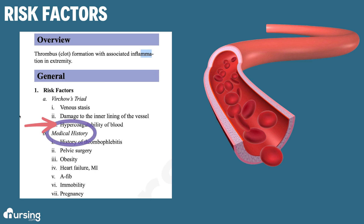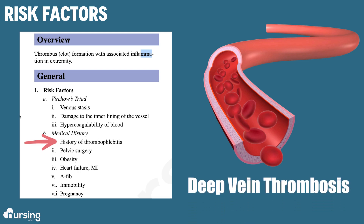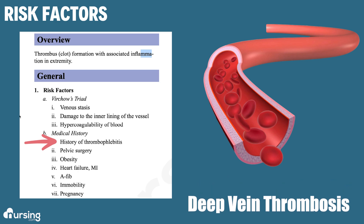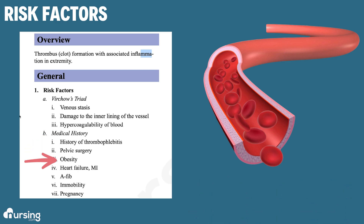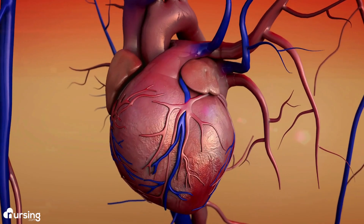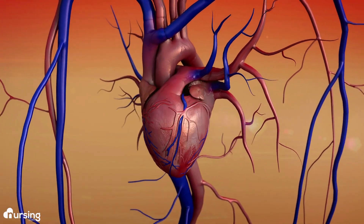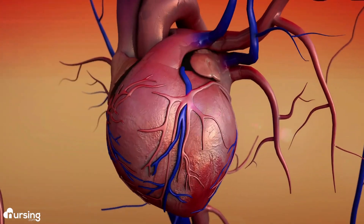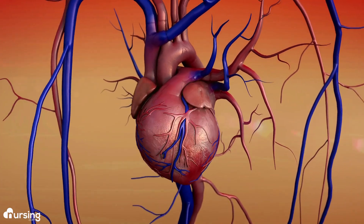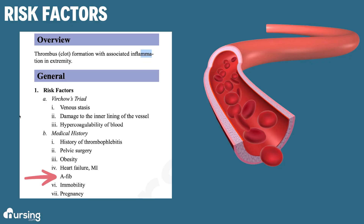Things you might see in a patient's medical history to indicate they're at risk would be a previous thrombophlebitis experience or previous DVT — deep vein thrombosis — which usually occurs deep within the arms or the legs. Obesity is a risk factor, as are cardiovascular disorders like heart failure, MI, or atrial fibrillation, since these are vascular issues that cause damage to the vessels. AFib can cause clots because when the atria are fibrillating or quivering, it causes blood to pool within the atria.